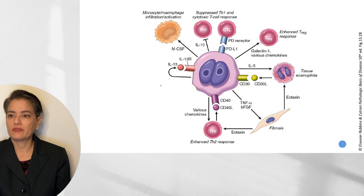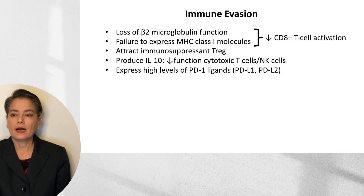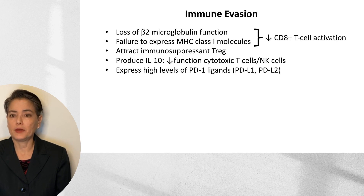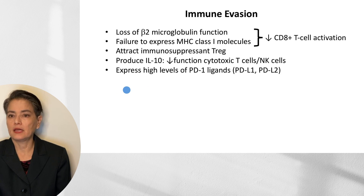This figure, modified from Robbins and Cotran, shows how the Reed-Sternberg cell secretes varieties of cytokines and chemokines to create the tumor microenvironment it needs. Regarding immune evasion: Reed-Sternberg cells can lose beta-2 microglobulin function and MHC class I molecule expression, decreasing CD8-positive T cell activation. They attract immunosuppressive Tregs and produce IL-10, which decreases the function of cytotoxic T cells and natural killer cells. They also express high levels of PD-1 ligands to reduce the T cell response.